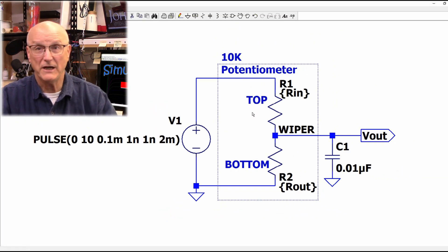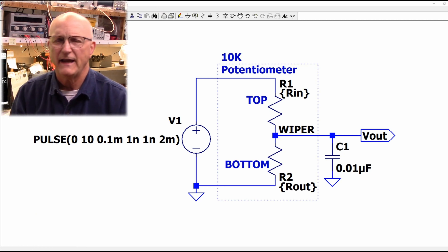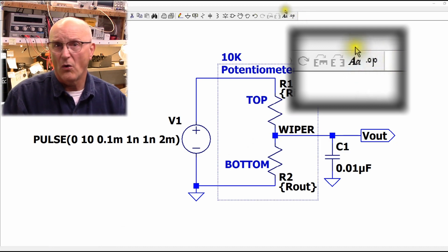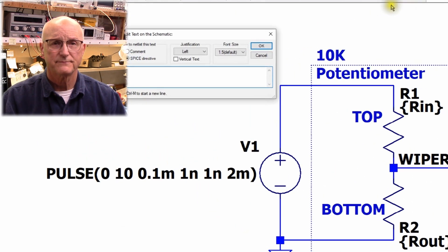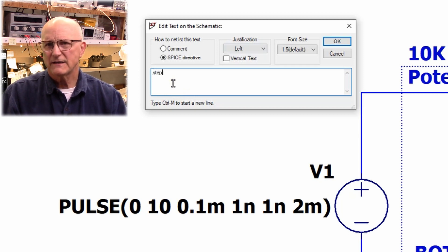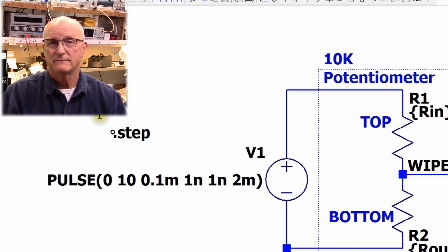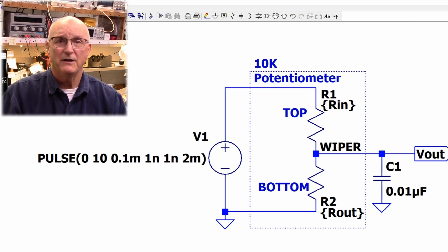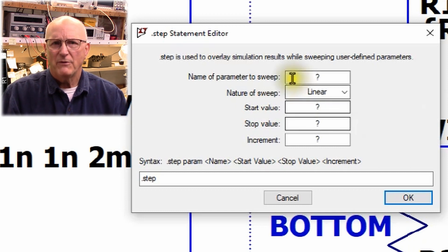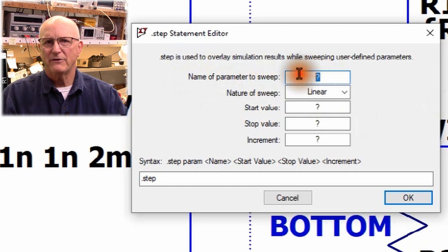Now we need these values to change somehow. We start this process by defining a .step SPICE directive. We can either hit the S key or we can click on the .op icon on the toolbar. The SPICE directive dialog box opens. Type .step in the text field and press enter.